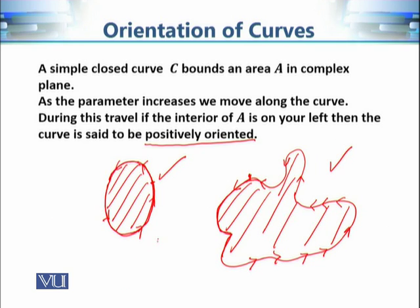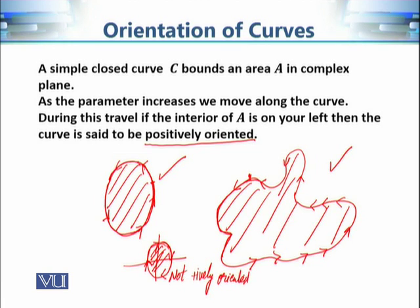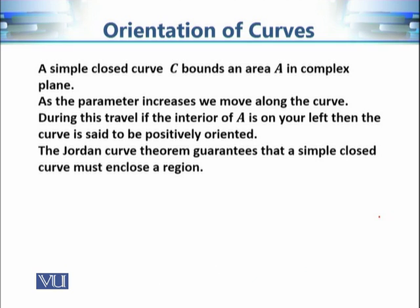If we consider a circle where we are moving in the clockwise direction, the area enclosed by the circle is on the right side of the moving object, so it is not positively oriented. The Jordan curve theorem guarantees that a simple closed curve always encloses an area in the complex plane, so we can always check whether a simple closed curve is positively oriented or not.